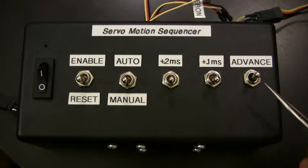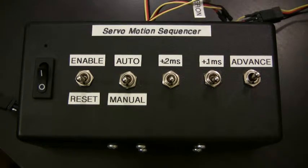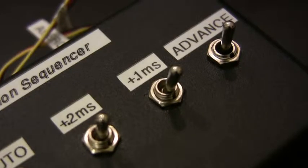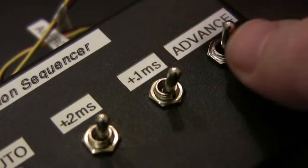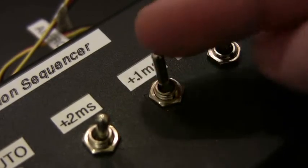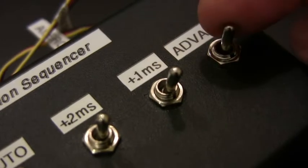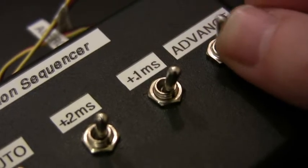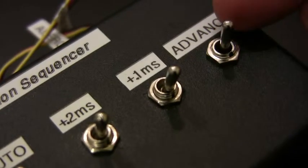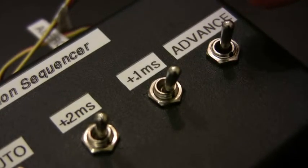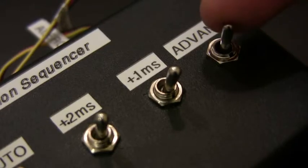And this is a momentary switch that is used in manual mode to advance the servo whenever the user is ready for the next test sequence. It's worth noting that there are two types of switches. One is a latching switch which will move and stay in each direction, and the other is a momentary switch which moves away from neutral to the on position and then back to neutral. In this case the advance one is the only momentary switch. All the other ones are latching toggle switches.